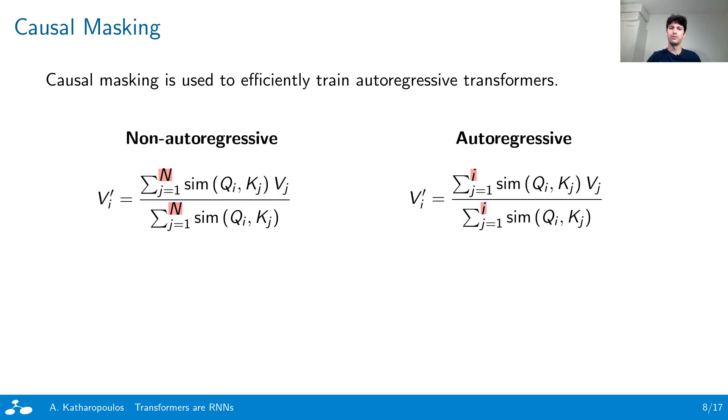However, if we take a closer look at the mathematical formulation of autoregressive and non-autoregressive transformers, we can easily see that the only difference is up to which value we perform the weighted averaging. Namely, the full sequence length N for the non-autoregressive transformer versus the current element i for the autoregressive one.